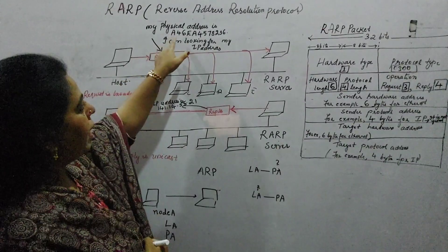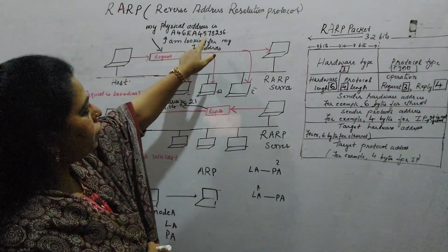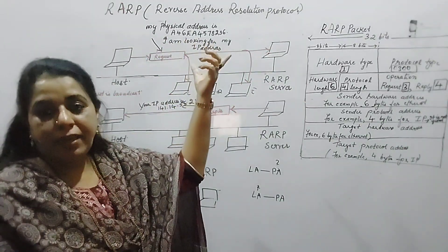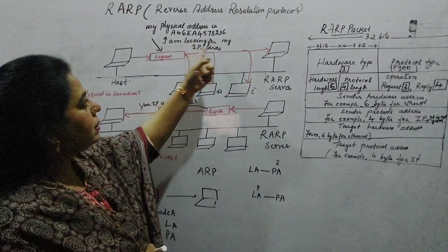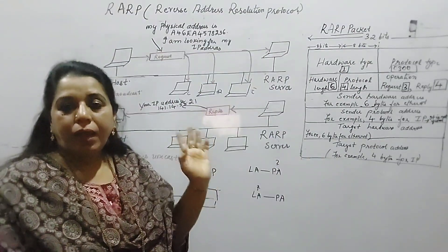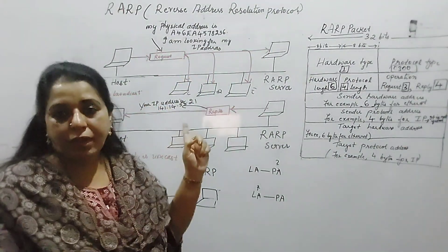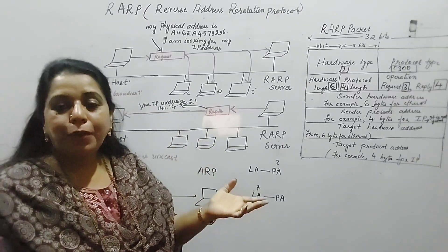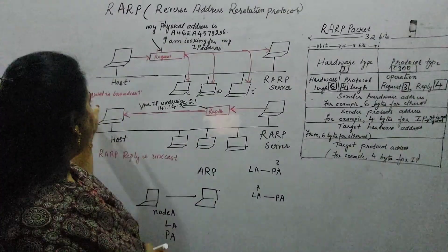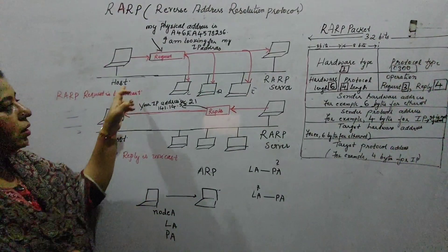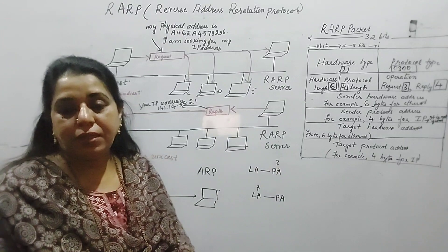The RARP request message says: my physical address is A46E A4578236 — a MAC address. I am looking for my IP address. The request is a broadcast, same as ARP. Just as an ARP request is a broadcast, here the RARP request is also a broadcast, so all the hosts connected in the network will receive the message.